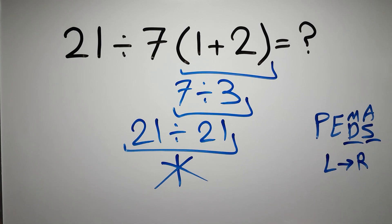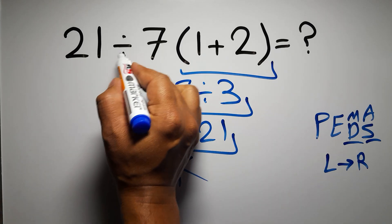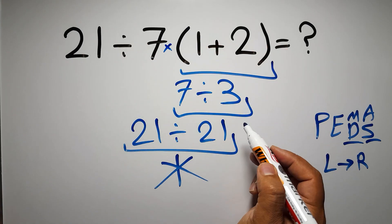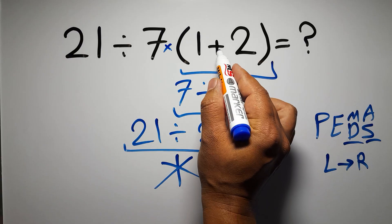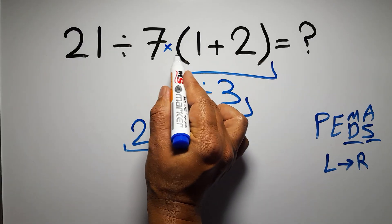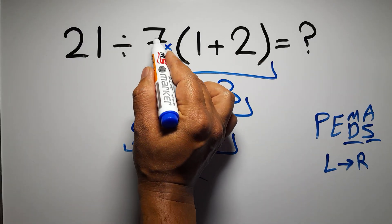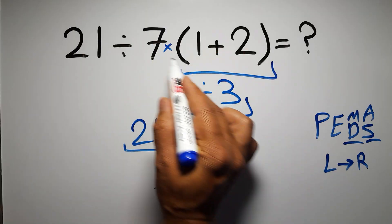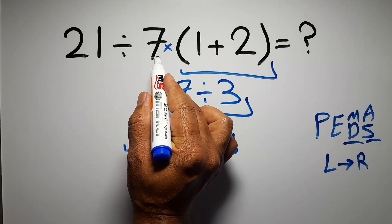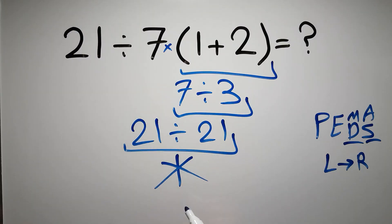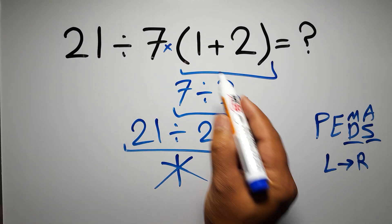The same applies to addition and subtraction. In this expression, we have one division, one multiplication, and one set of parentheses. Inside these parentheses we have one addition. We also have a multiplication here, because in mathematics when any number is placed next to parentheses it means multiplication — we usually don't write the multiplication sign for brevity.